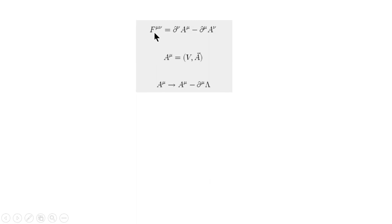Here we have Maxwell's field strength tensor. We can write all of Maxwell's equations in terms of this tensor formulation. In special relativity, this combines B and A into a four-vector potential, and this four-vector has a gauge invariance given by the equation shown here.